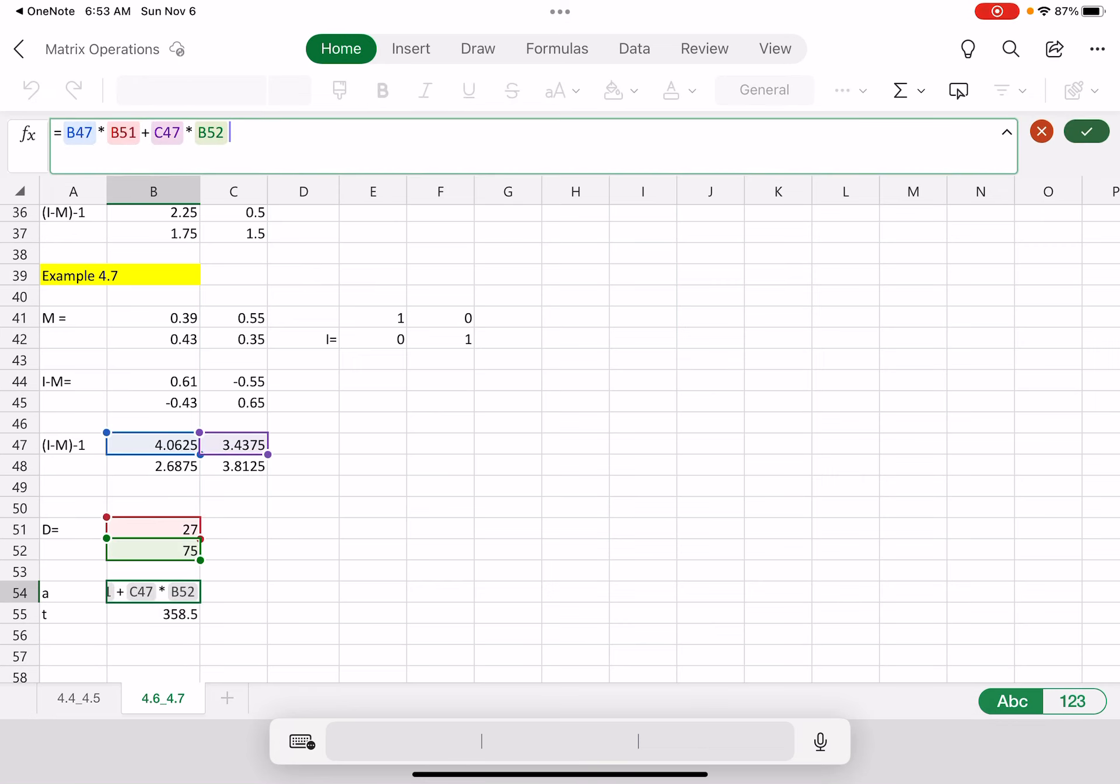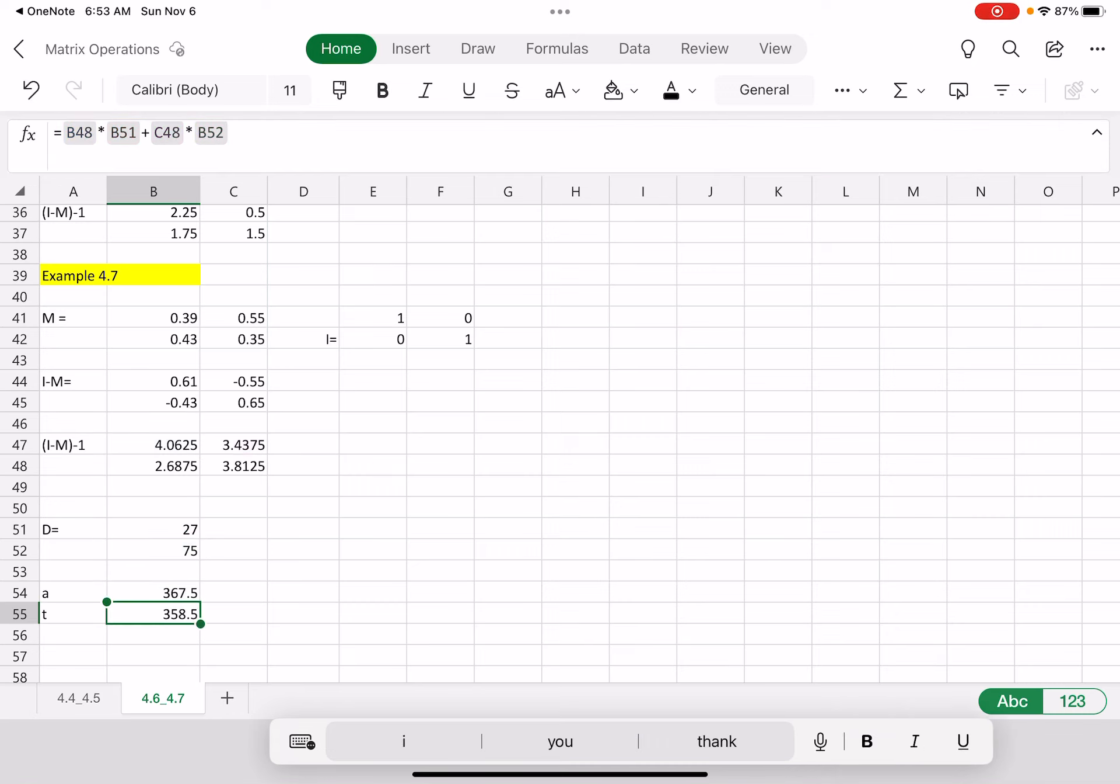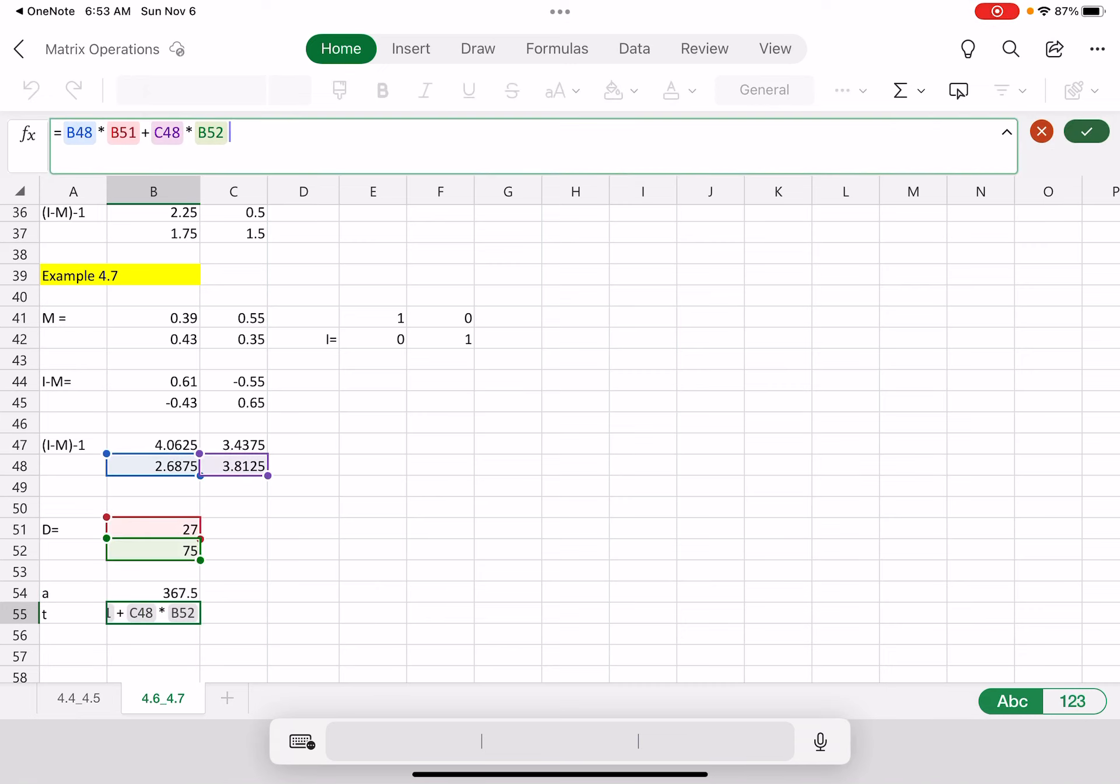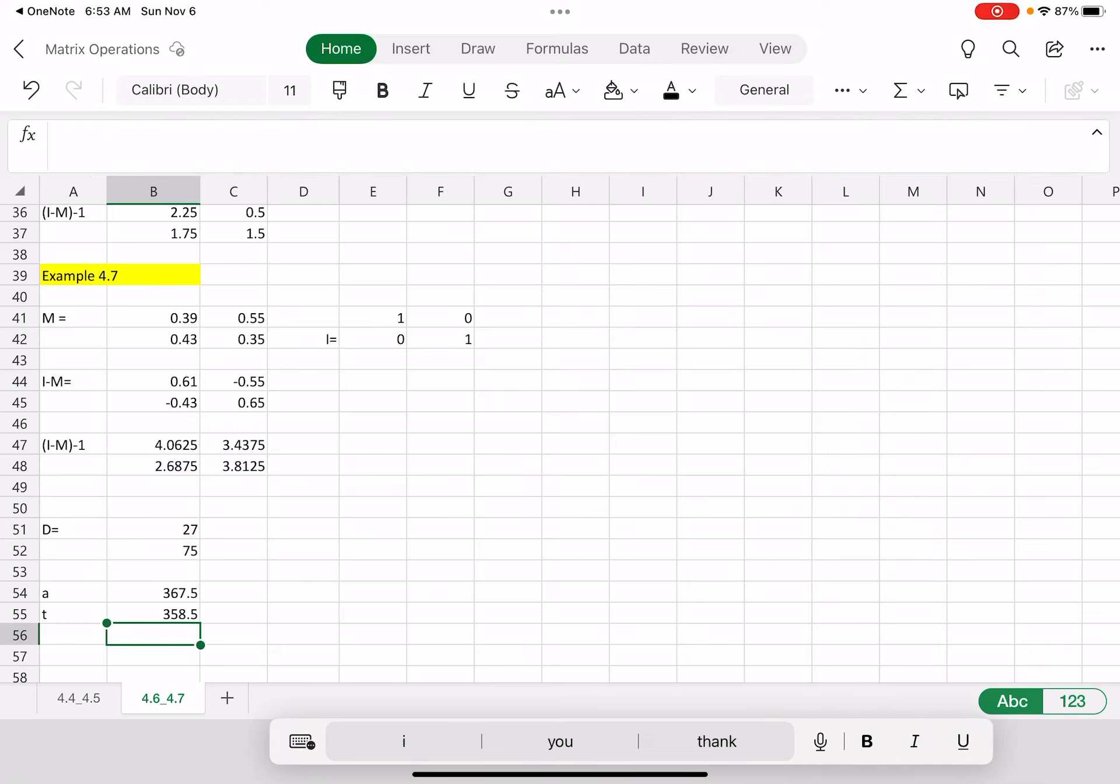There is my code. I took my IM inverse matrix, A11. Multiplied it by my first demand, 1. Plus my alpha, 1, 2. Times my demand, 2. And hit enter. And there is my first agriculture total. And then I find my total output for agriculture. And then there is my total output for tourism. By doing the exact same thing. By taking the second row of. I'm second column. No I was right. Sorry. Second row. And multiplying it by the demand. And adding them together. To get this.